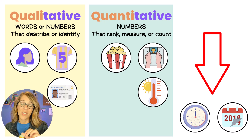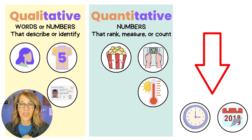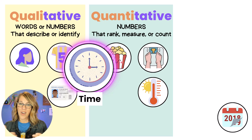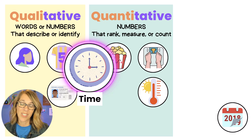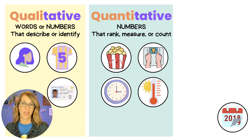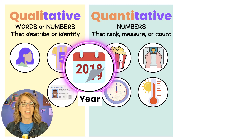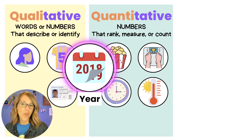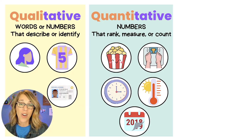What about the next two? See if you can classify them — maybe hit pause and then come back. Time is a number, and as time moves on it's sequential; I can put all of that onto a timeline. So it's a number with meaning — quantitative. The last one is what year it is, changing from 2018 to 2019. I can put those along a timeline too, so if you said quantitative for both, you are right.